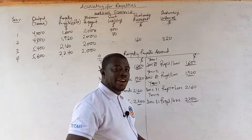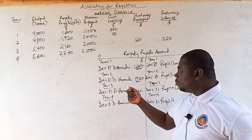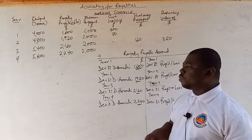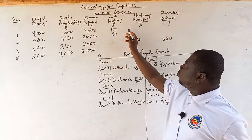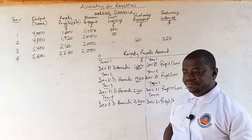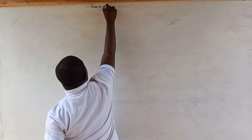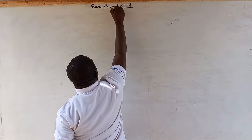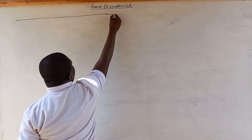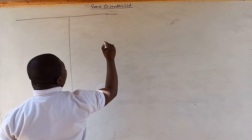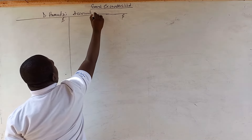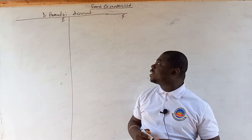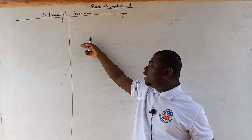We now prepare de-Homaji's Account — the landlord's account. When you have the name of the person, use that name as the title of the account rather than just 'landlord.' This is a liability account (creditor). The Royalty Payable Account debited de-Homaji's name, so by double entry, de-Homaji's Account is credited with those figures. We prepare this year after year.